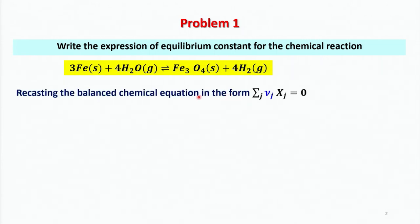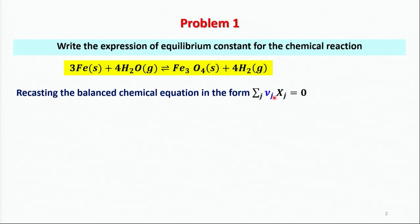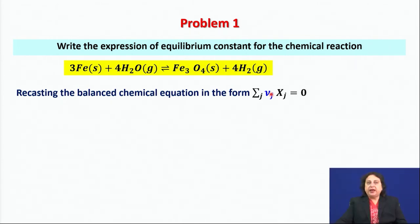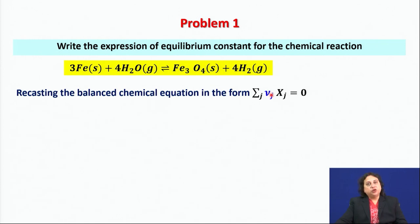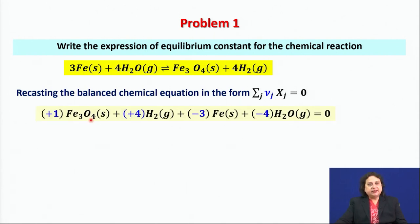The first step is to recast or rewrite the balanced chemical equation in the form of an algebraic equation. In this case, j is the j-th component in the equilibrium mixture. I have 4 components, and I need to identify the stoichiometric coefficients of each component in the balanced algebraic equation. So I rewrite this equation in the form of this algebraic equation.